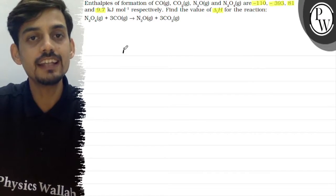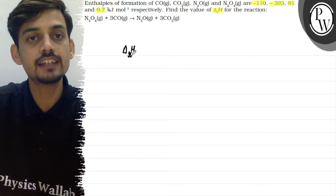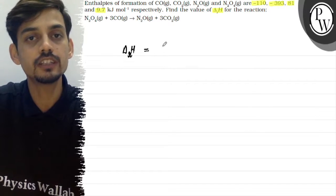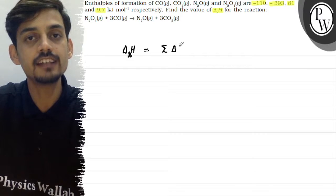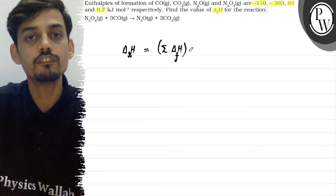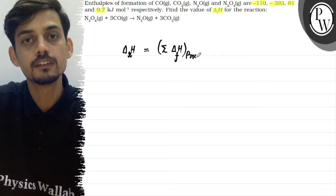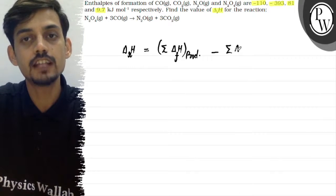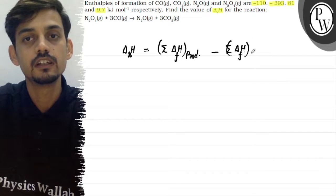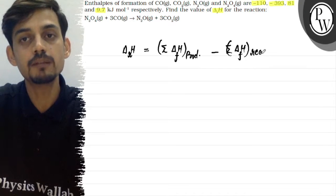For any reaction, if we have the enthalpies of formation of the different reactants and products given, the enthalpy change can be defined as the summation of enthalpies of formation of products minus the summation of enthalpies of formation of reactants.